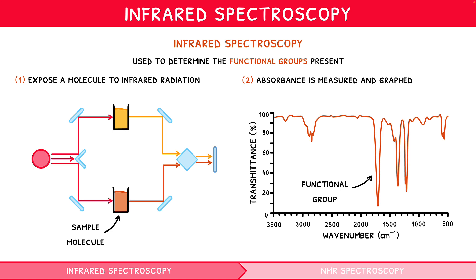The region below 1500 cm⁻¹ is known as the fingerprint region, aptly named as it is unique to each molecule. However, it is very complex, so for your exam, ignore it. Instead, focus on the remainder of the graph, which shares similarities based on functional groups.